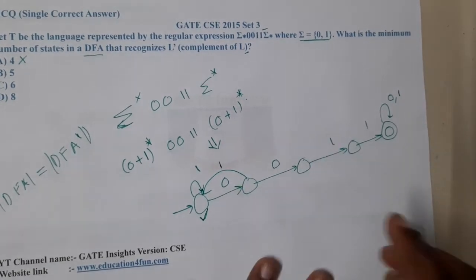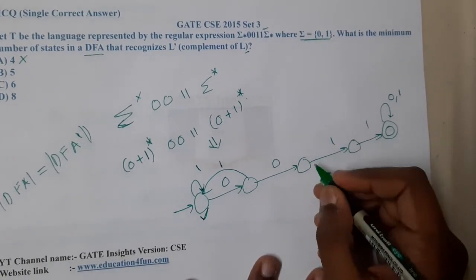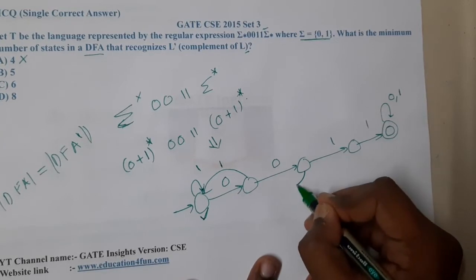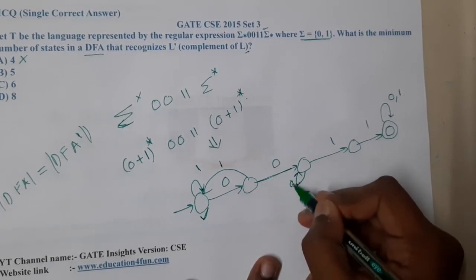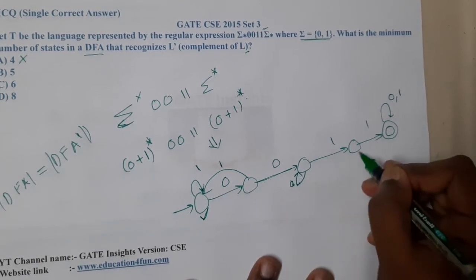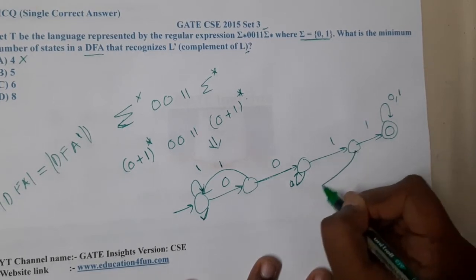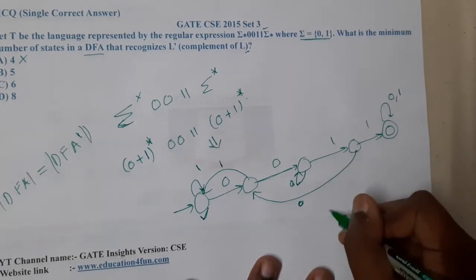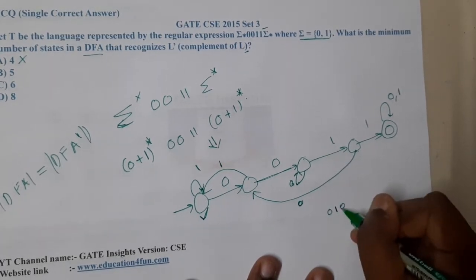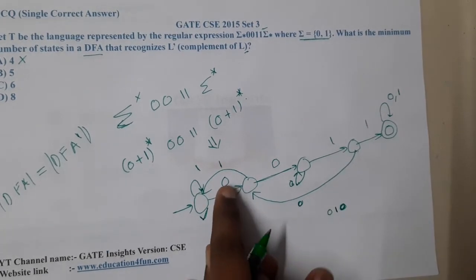Assume that here we got 10, so we can directly loop here, because the previous one is 0 and this is also 0. You can loop—00 is available still here. So 0011, now if 0 comes, I think we need to come back to here. The reason why I am saying is, our string is 01.